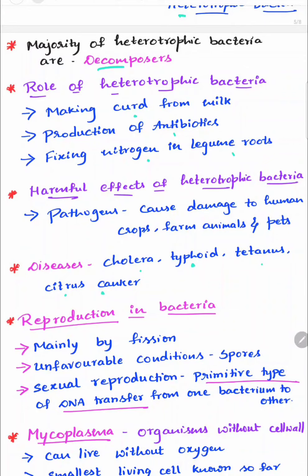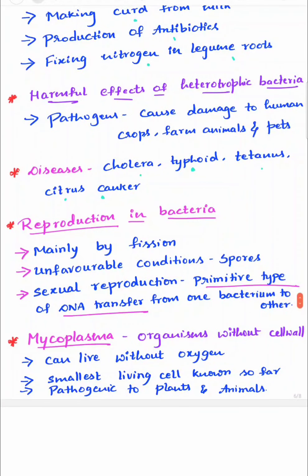Regarding reproduction in bacteria, bacteria reproduce mainly by fission, that is division. Under unfavorable conditions they produce spores. Sexual reproduction also occurs in bacteria, which is a primitive type involving just a DNA transfer from one bacterium to another.